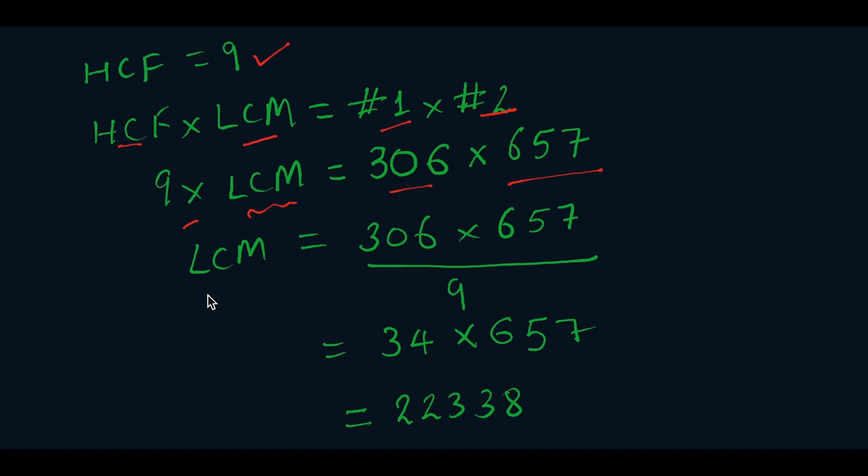So the LCM will be equal to 306 multiplied by 657 divided by 9. Now we divide 306 by 9 to get 34, so 34 multiplied by 657 is 22,338. Therefore, the LCM of 306 and 657 is 22,338.